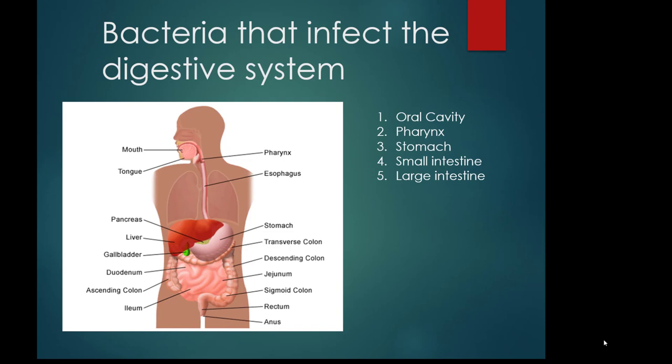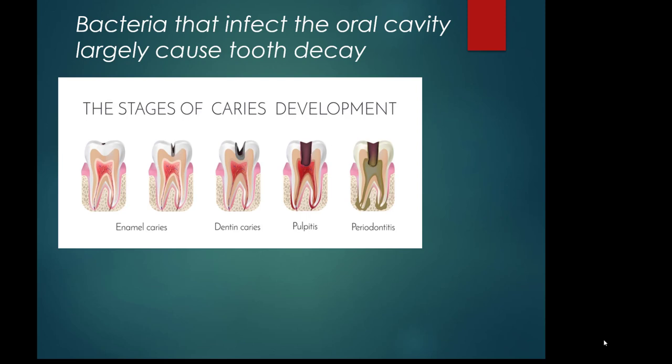Sites that can be infected include the oral cavity — largely the teeth and gum line, which falls under the purview of dentists — and the pharynx, which is the throat, already covered with Streptococcus pyogenes. Surprisingly, the stomach can be colonized by one known bacteria. The small intestine and large intestine are the major sites of infection. We'll review them in that order, minus the pharynx, starting with the oral cavity.